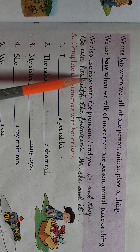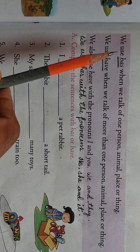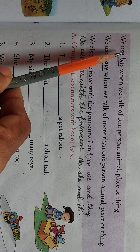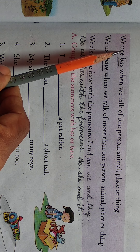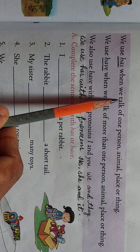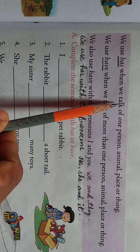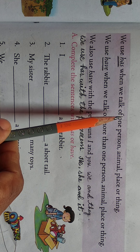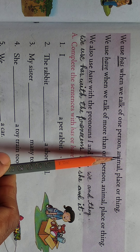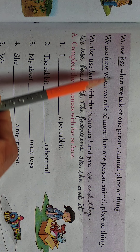Here some rules are given about has and have. Let us read. We use has when we talk of one person, animal, place, or thing.